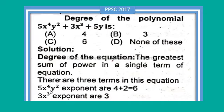First term: 5x^4y^2, exponent is 4 + 2 = 6. Second term: 3x^3, exponent is 3. Third term: 5y, exponent is 1. So the greatest power is 6, therefore option C is correct.